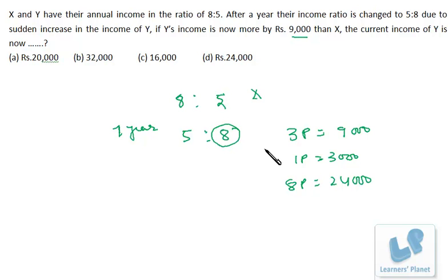Because we are asked about the current income of Y, right? So that's 24,000. I hope you are clear.